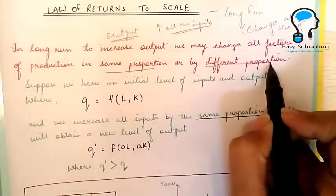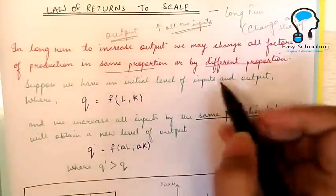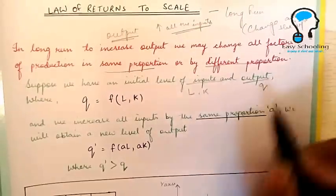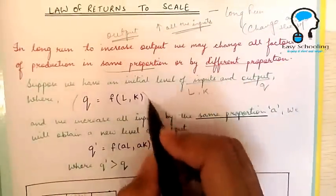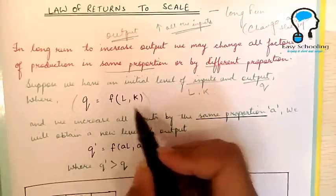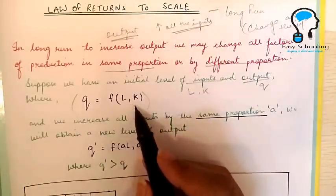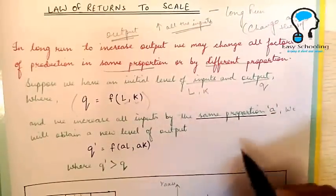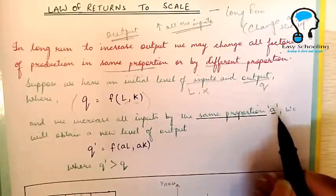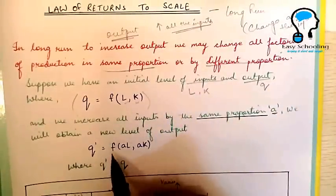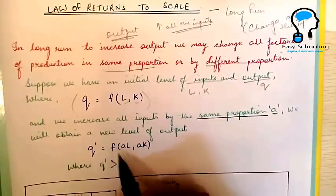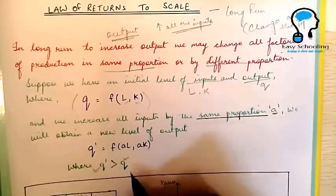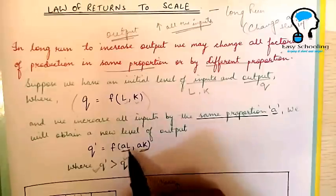In the long run, to increase output we may change all the factors of production in the same proportion or by a different proportion. Suppose we have an initial level of inputs, L and K, and our output is Q, so our production function is Q = f(L, K). Now if we increase all the inputs — labor and capital — by the same proportion A, we obtain a new level of output: Q' = f(AL, AK), where Q' is obviously greater than our previous output Q.